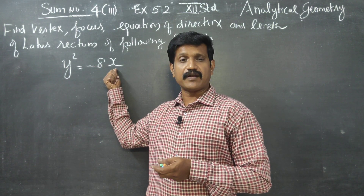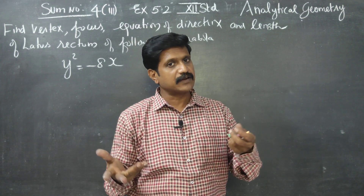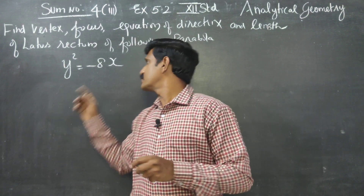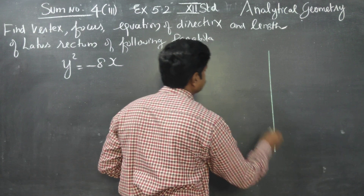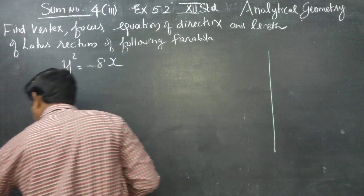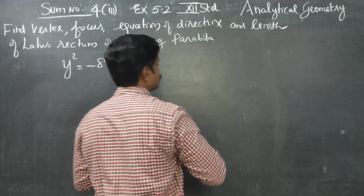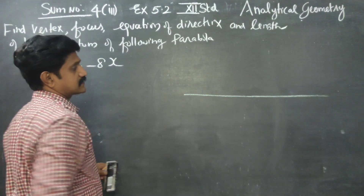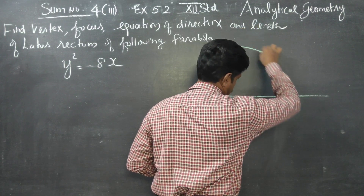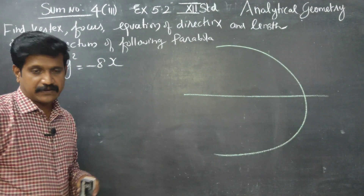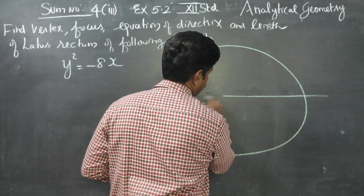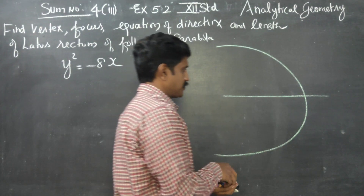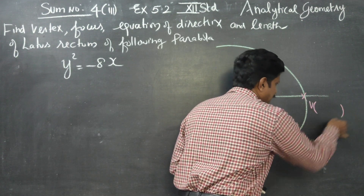The parabola opens leftward. After establishing that it opens leftward, the first information we write is the vertex. The vertex is a very convenient piece of information to start with.